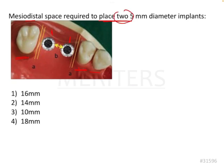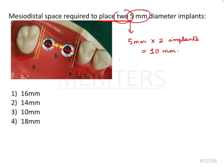They have mentioned two 5mm diameter implants. So let's pick up what is given: 5mm and 5mm — two implants. Totally we have 10mm for sure. That is the space required for the implants, only the implants themselves.